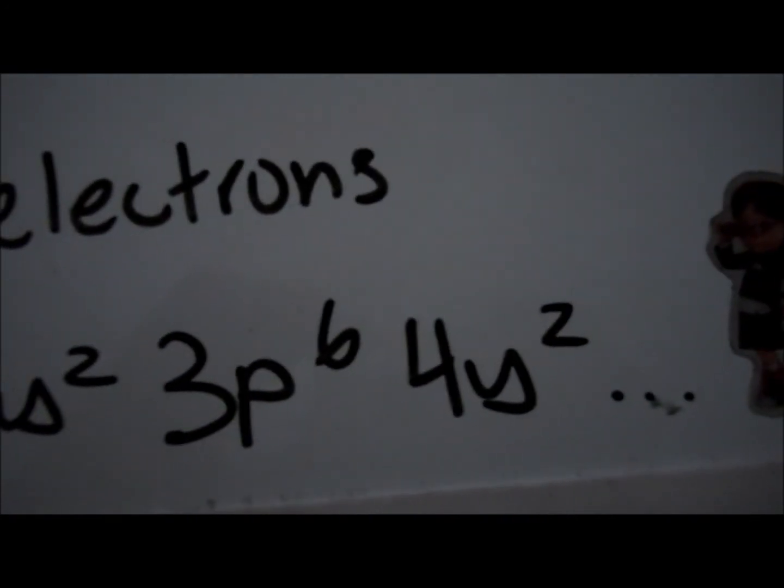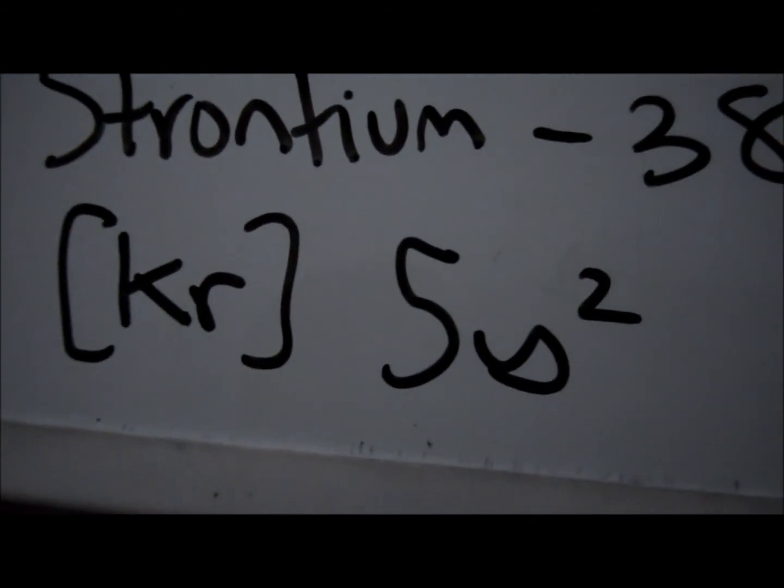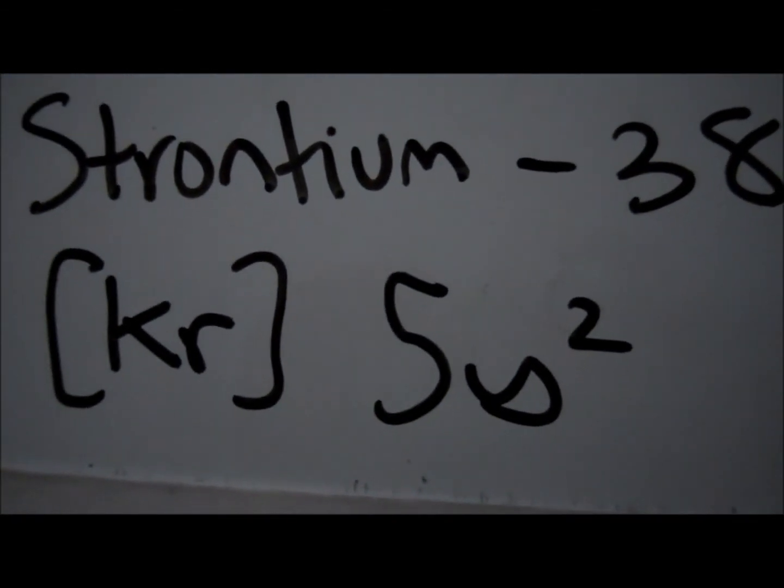Find the noble gas before it, in this case, krypton. Krypton has 36 electrons.